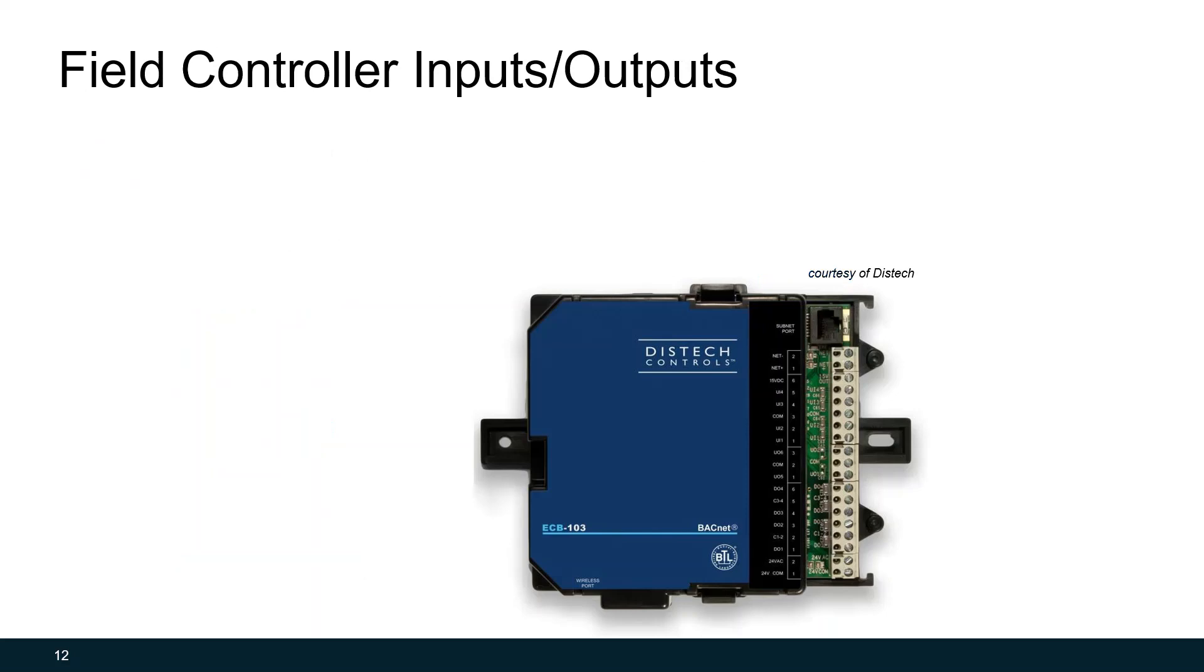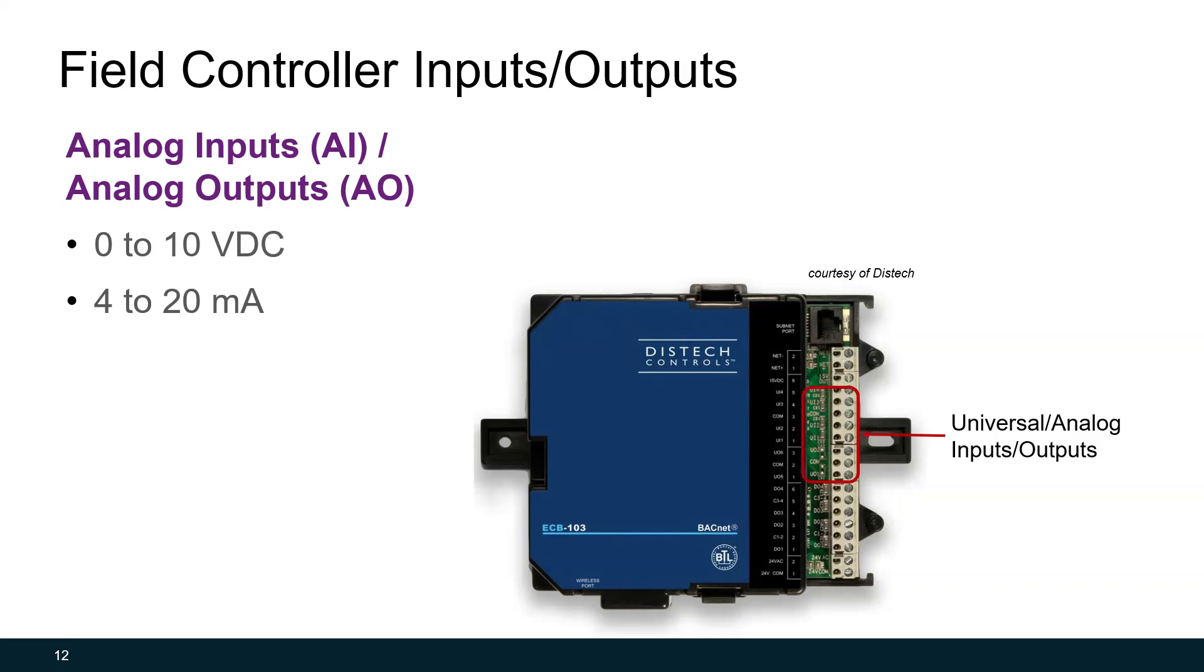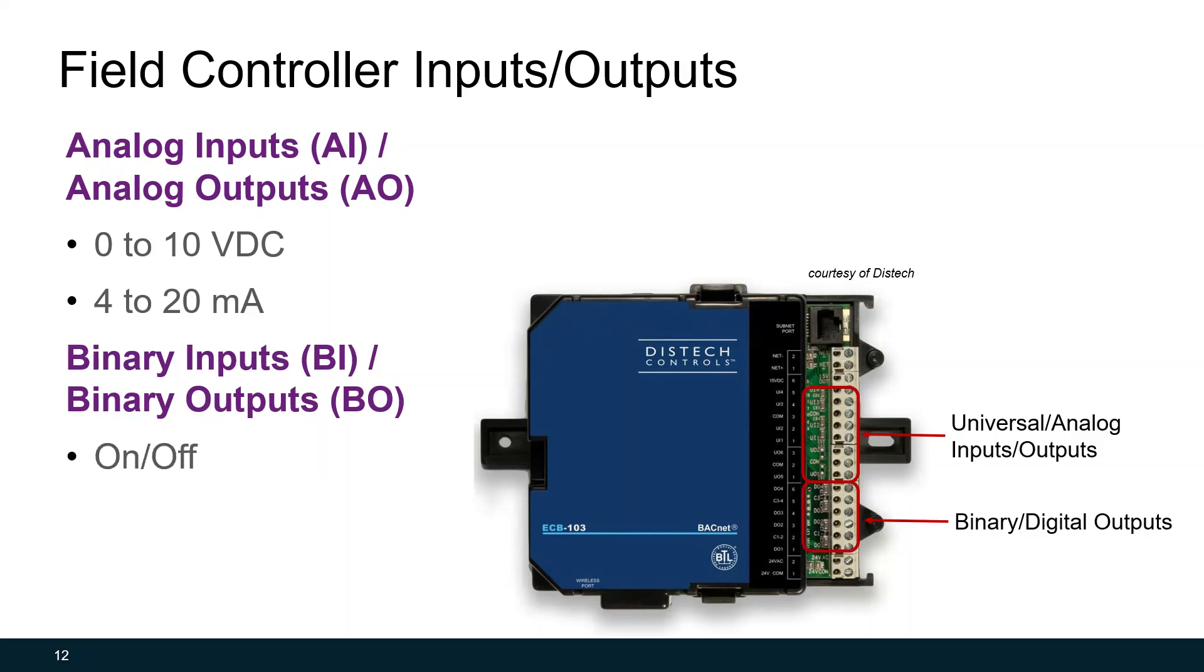Here's an example of a field controller. This one is by Desk Tech Controls. You'll see that it's essentially a miniature computer. On the right is a board for inputs and output signals. This is where we physically wire in sensors and control devices to communicate with the controller. There's usually a section for analog. Sometimes they're universal inputs and outputs. Universal just means it can accept analog or digital. Analog signals usually are transmitted in a direct digital control system where you would use this device in 0 to 10 volts DC or 4 to 20 milliamps.